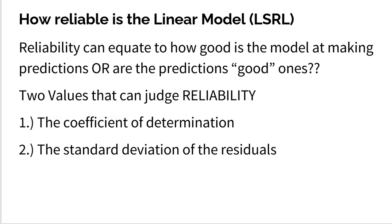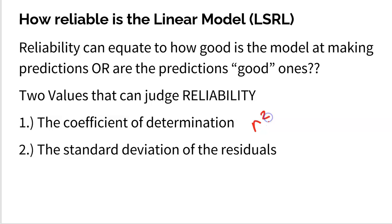The first is called the coefficient of determination — just take a minute and appreciate that name. The coefficient of determination sounds really powerful. But to be honest, the coefficient of determination is simply your R value squared, your correlation squared. We'll talk about that in a little bit more detail in a moment.